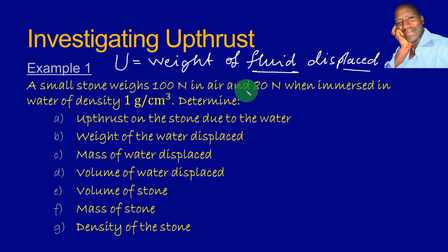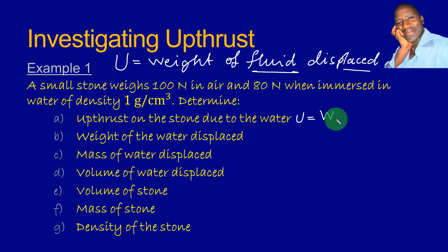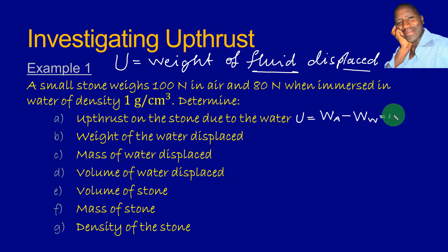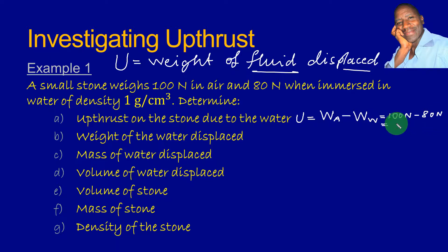We can determine the up thrust on an object by taking the weight of the object in air and subtracting the weight in the fluid — in this case, water. In air, this object weighs 100 N. In water, it appears to weigh 80 N. Therefore, the difference will be 20 N, and this will be equal to the up thrust.